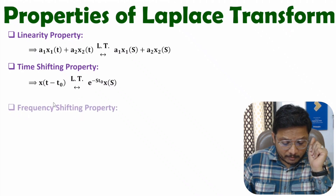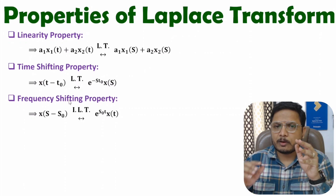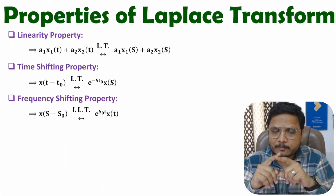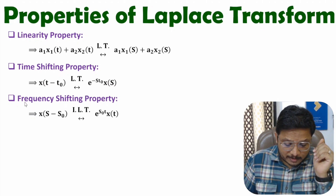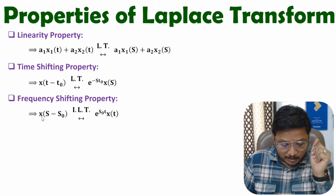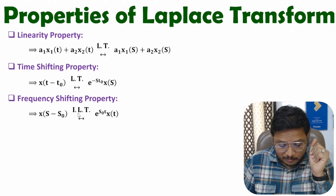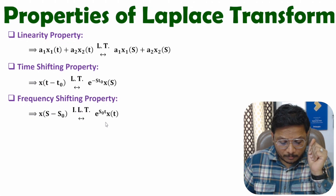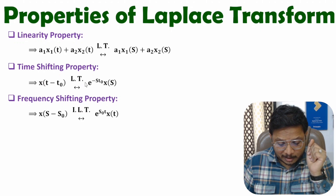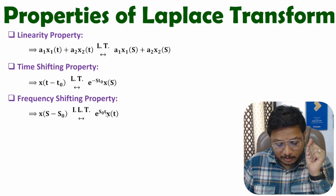Now I will discuss the frequency shifting property. If we have a Laplace domain signal X(s), and after inverse Laplace its time domain signal is x(t), then after a frequency shift the signal becomes X(s − s₀). Applying inverse Laplace transform gives you e^(s₀·t) multiplied with x(t). Notice that in time shifting a negative sign in time gives e^(−s·t₀), whereas in frequency shifting a negative sign in s gives e^(+s₀·t) multiplied in the time domain.